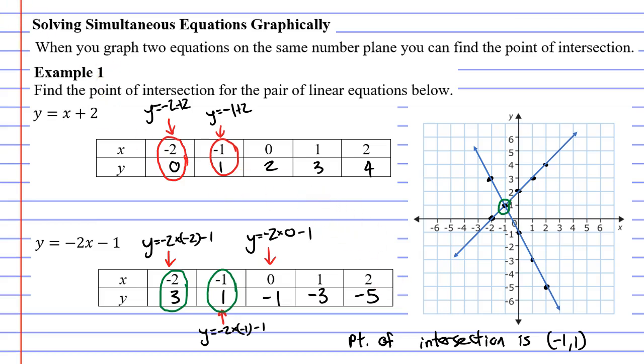You might have noticed that we could have solved this without the graph. We could have actually solved it just using our table of values. And the reason for that is if you look here and here we get the exact same x and y value, which is exactly where the two lines intersected.